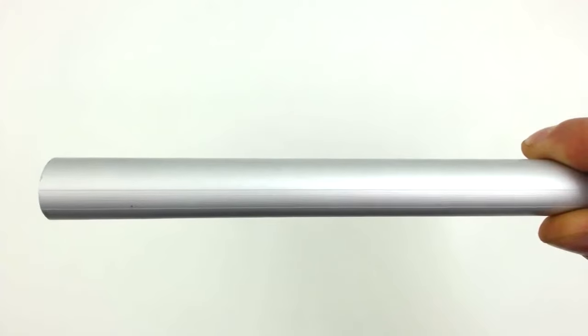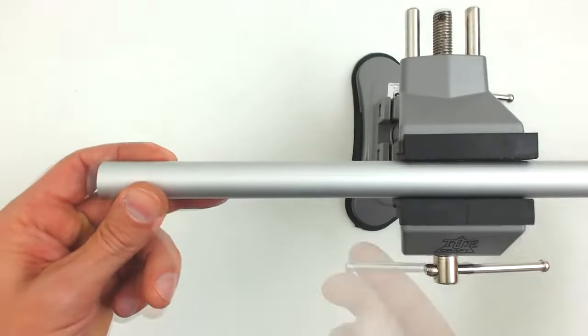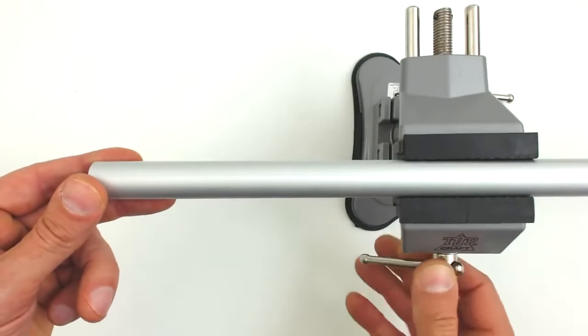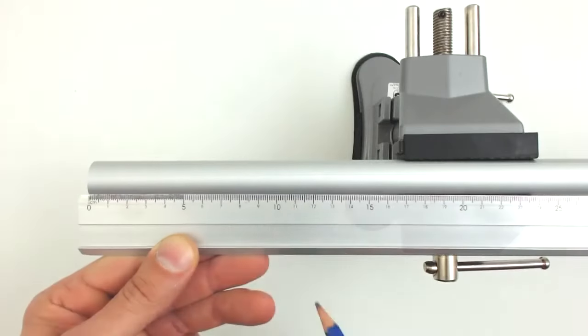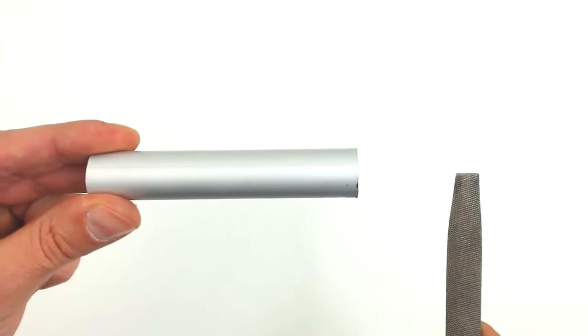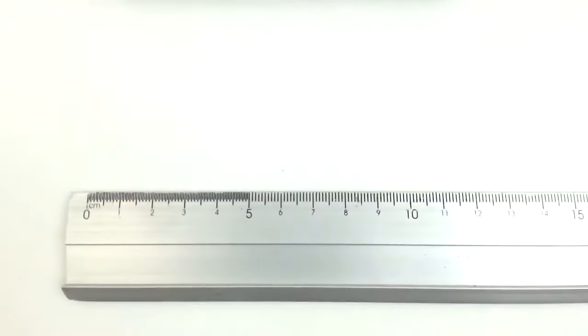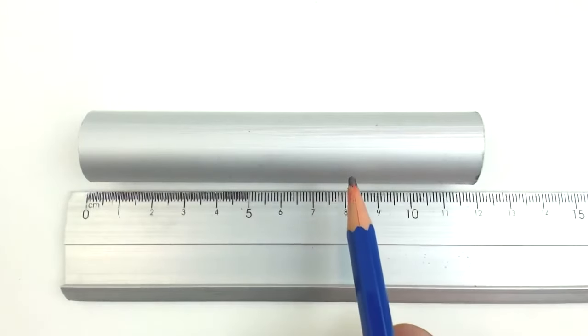We have to do the same procedure on the thinnest tube. We measure and cut it to 11 cm. And as before, we need to sand the edges. Now in this same tube, we measure 8 cm but we will only mark it halfway.